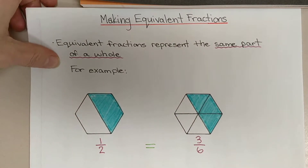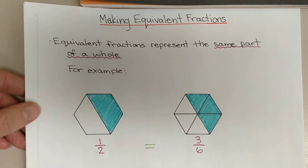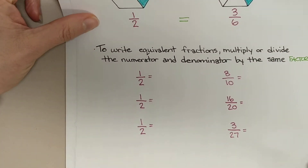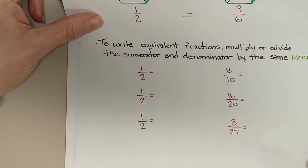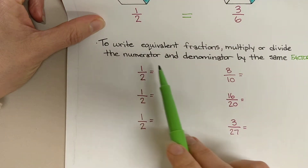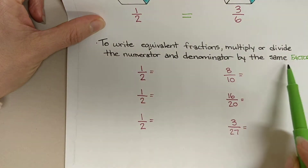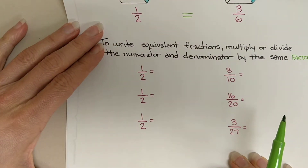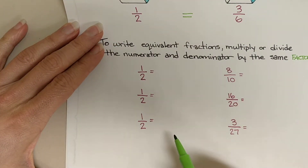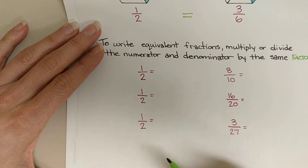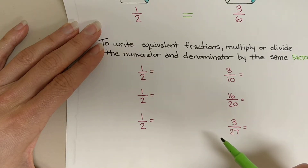So we can say that one half is equivalent to, or equal to, three sixths. Now we're going to look at how to make our own equivalent fractions. To write equivalent fractions, we can multiply or divide the numerator and denominator by the same factor, and we'll create an equivalent fraction.